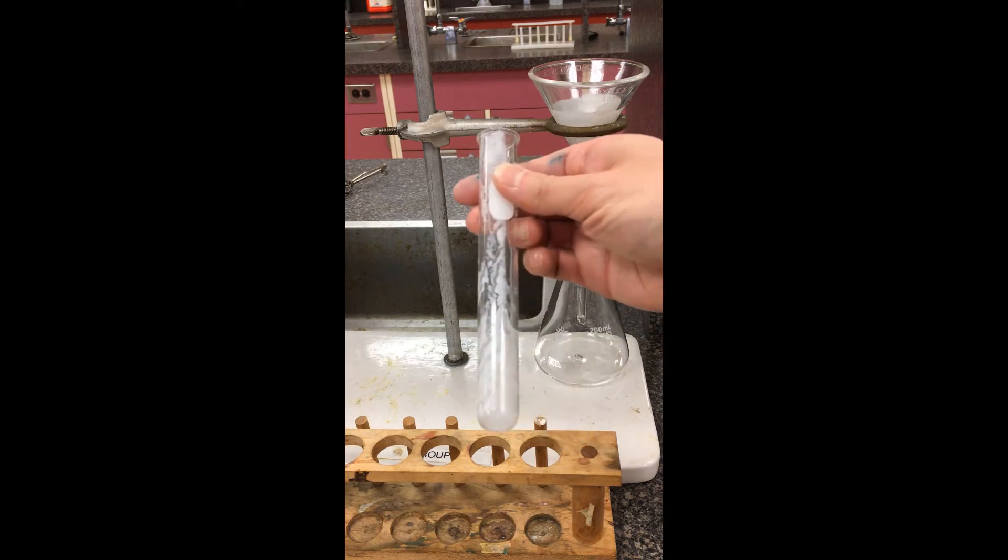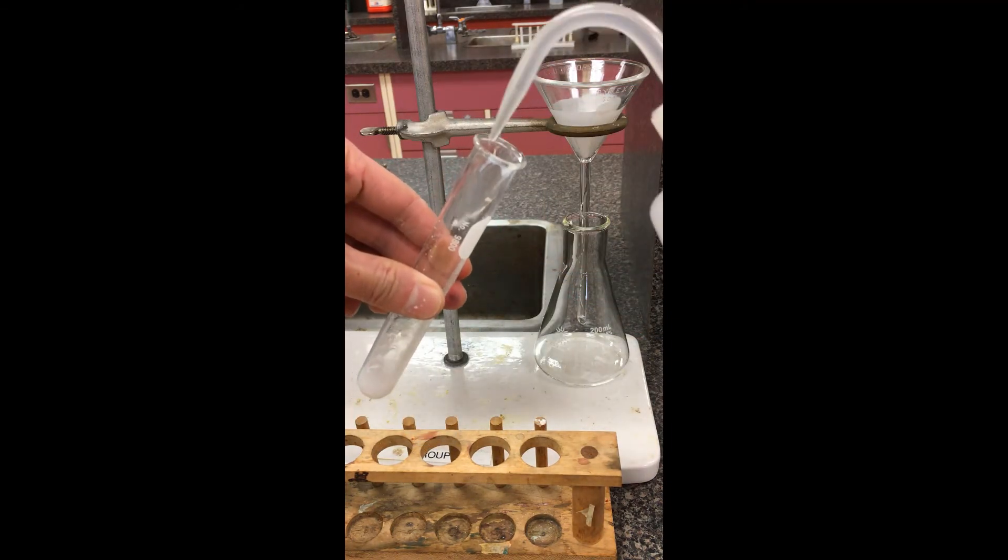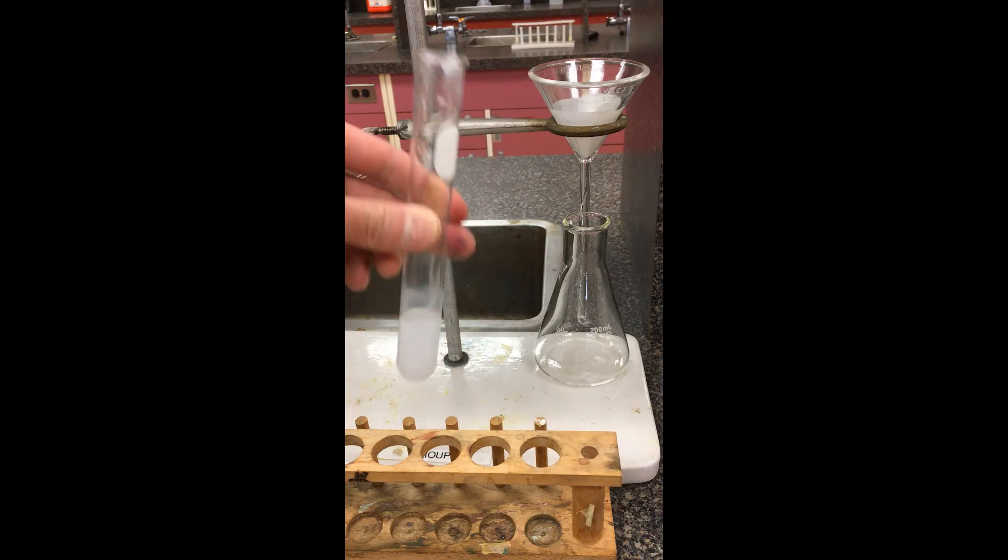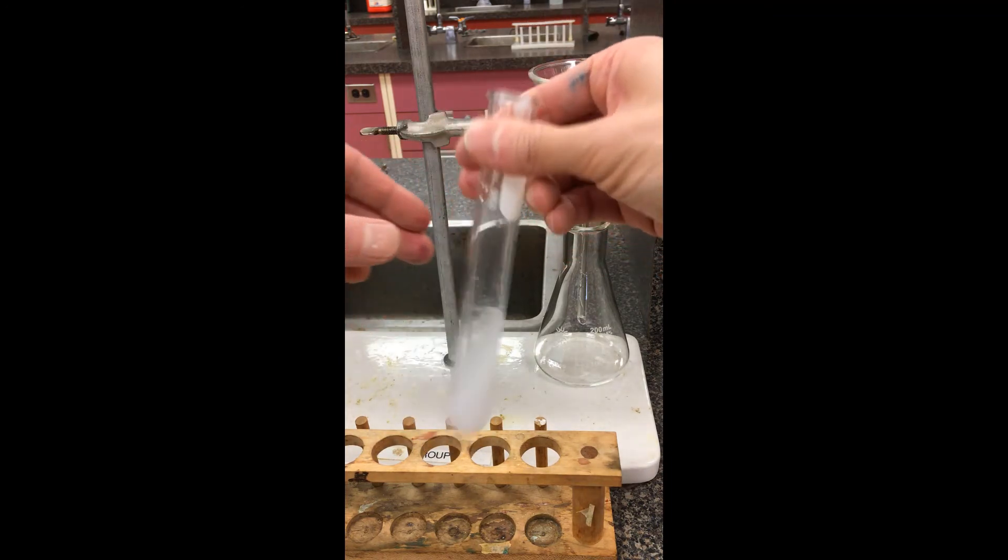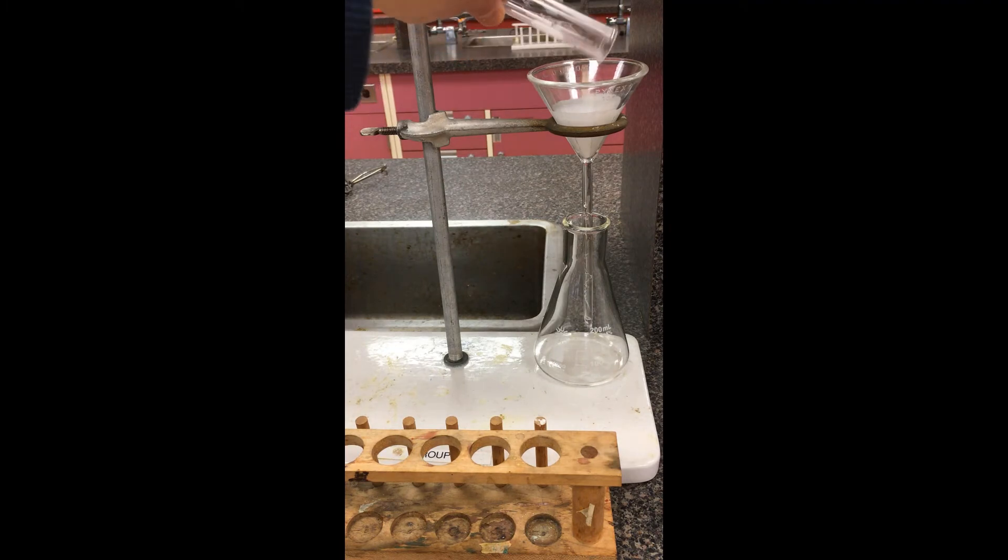You'll notice there's actually a lot of the residue left in my test tube here. You can actually wet this with just some extra water. Just roll it around a bit here. I want to make sure I collect up all the solid and have a good determination for the mass of the solid formed.